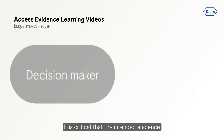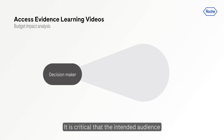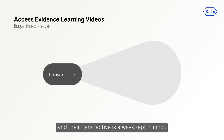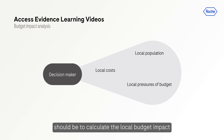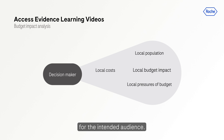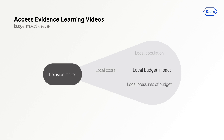It is critical that the intended audience and their perspective is always kept in mind. A decision-maker is only interested in issues that affect their budget. As such, the aim of any analysis should be to calculate the local budget impact for the intended audience.